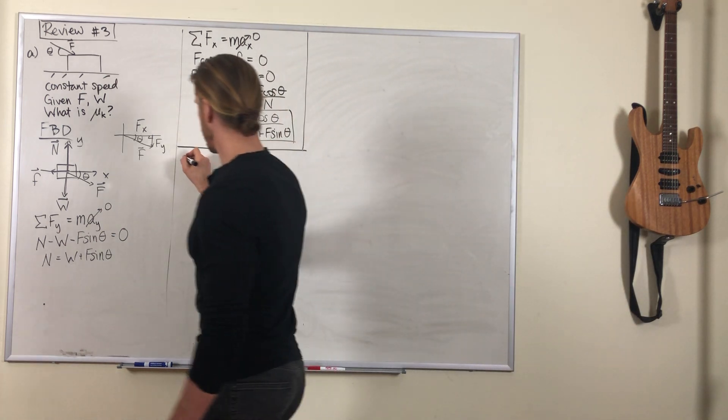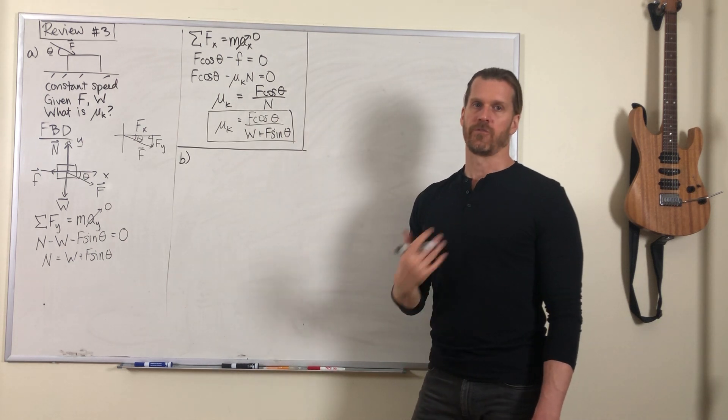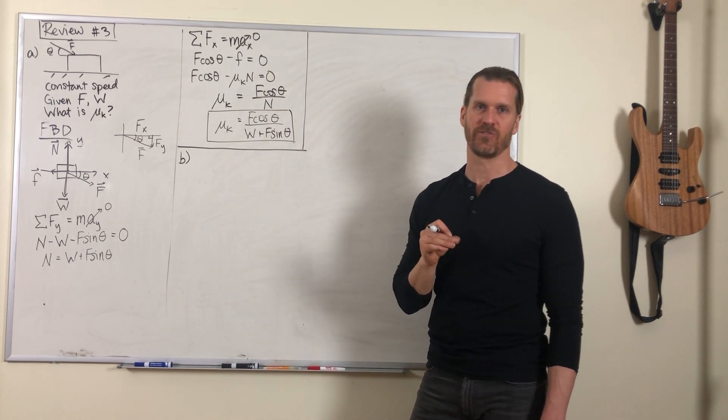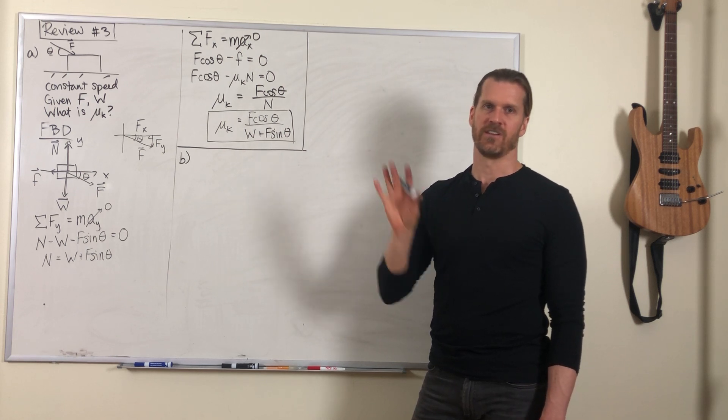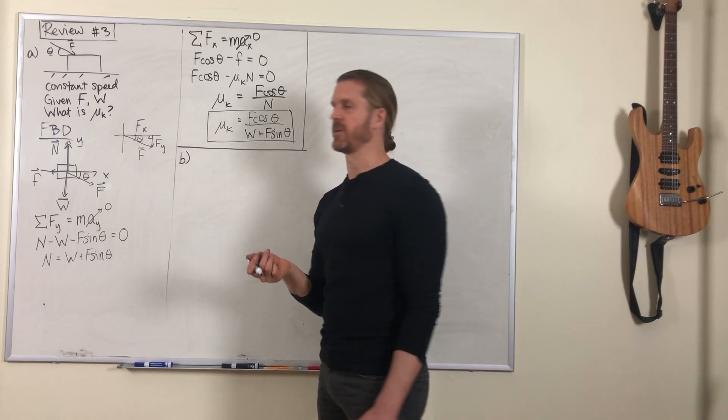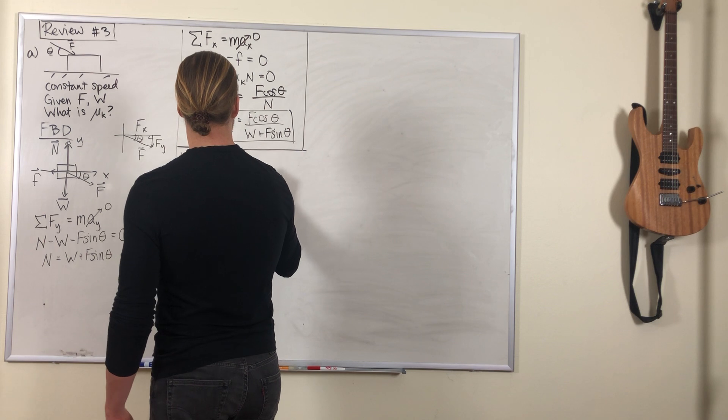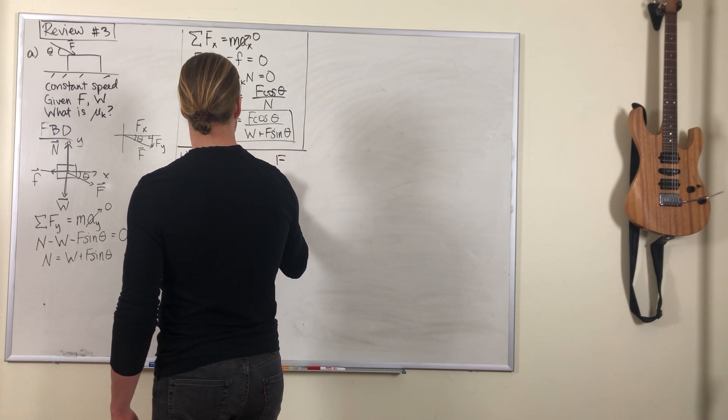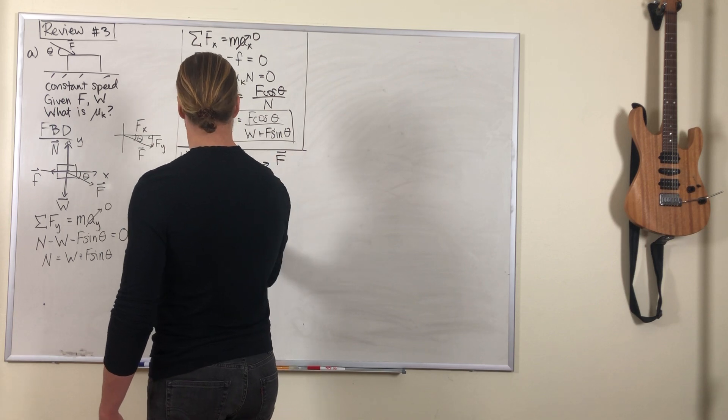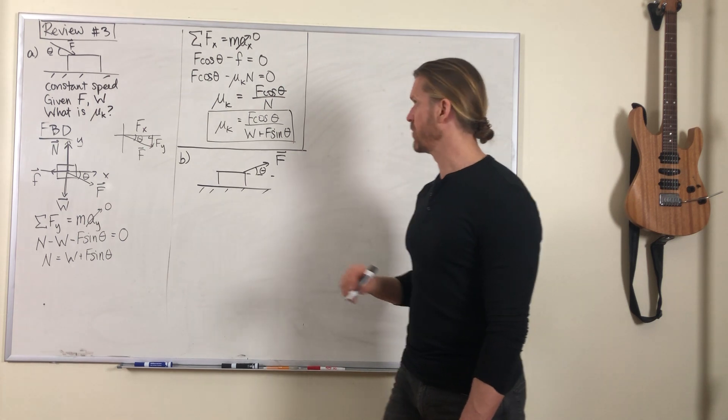Now part b, the setup is a little different. The same box with the same weight, there's still the same coefficient of friction. You're applying the same magnitude of push, but now you're pushing kind of upward at an angle or maybe pulling upward at an angle with a rope or something. So a sketch of the problem now looks like this.